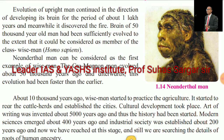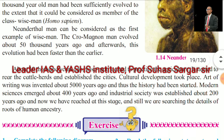Evolution of the upright man continued in the direction of developing its brain for about 1 lakh years, during which it discovered fire. The brain of the 50,000-year-old man had been sufficiently evolved to be considered a member of Homo sapiens. The Neanderthal man can be considered the first example of wise man. The Cro-Magnon man evolved about 50,000 years ago. About 10,000 years ago, the wise man started to practice agriculture, reared cattle, and established cities. Cultural development took place, the art of writing was invented about 5,000 years ago, modern sciences emerged about 400 years ago, and industrial society was established about 200 years ago.